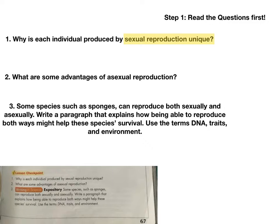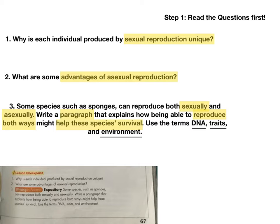For question one, sexual reproduction and being unique - that's the key idea. Why are things produced by sexual reproduction unique? For question two, we're looking for the advantages of asexual reproduction, the benefits - why is it good? For question three, we're looking at both sexually and asexually. We'll need to write a paragraph - in sixth grade that is six to eight sentences - about how reproducing both ways helps a species survive, using the terms DNA, traits, and environment. Now we'll start reading the section.